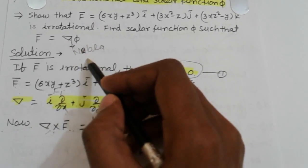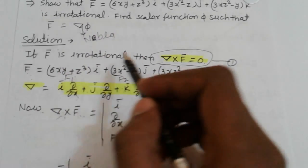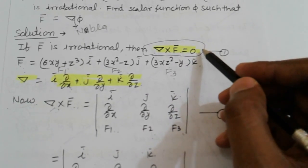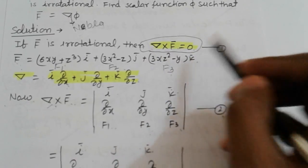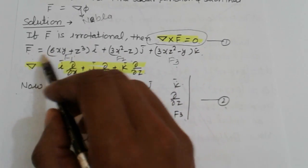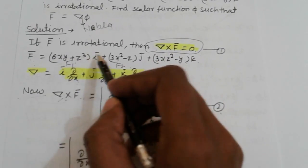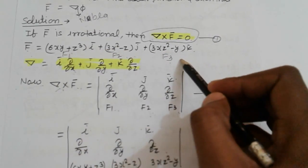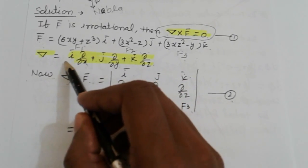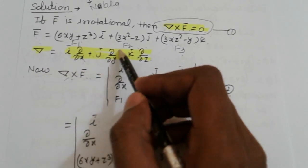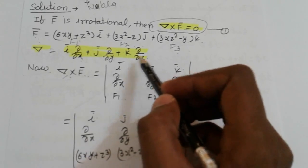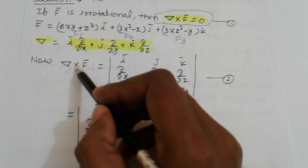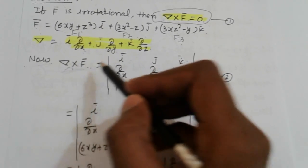If F is irrotational then nabla cross F equals 0. We will prove this. Our target is to prove that nabla cross F equals 0. Now write down vector F — first term, second, and third — considered as functions f1, f2, f3. Nabla is equal to i(del/del x) + j(del/del y) + k(del/del z). Nabla cross F means the cross product of nabla and F.